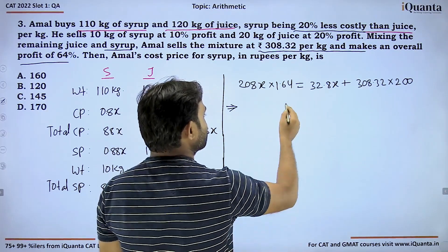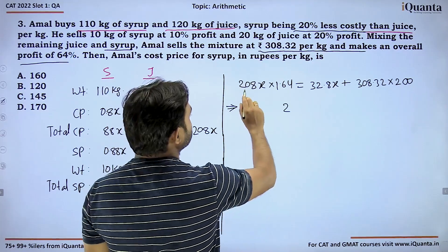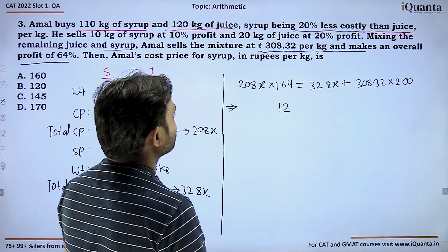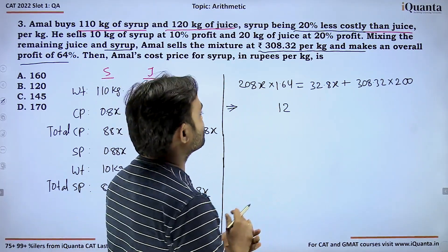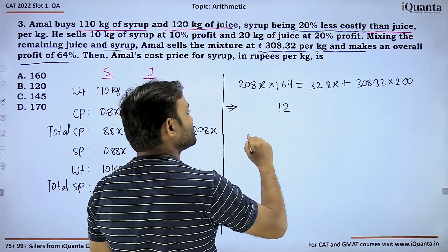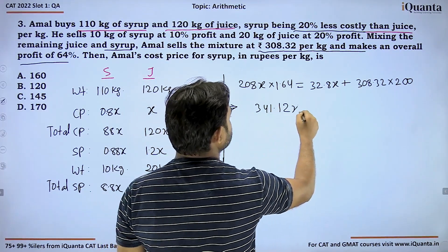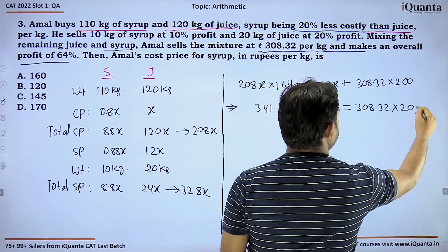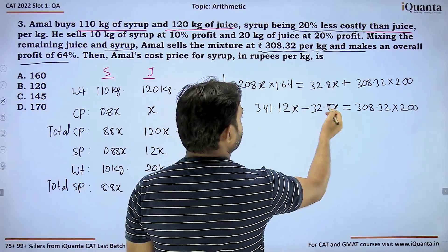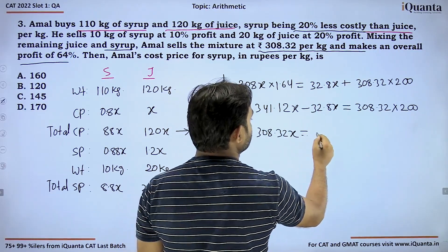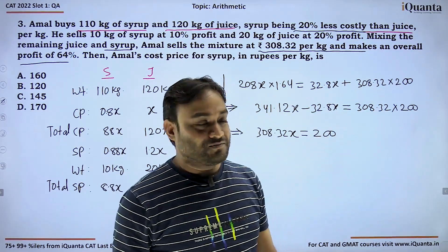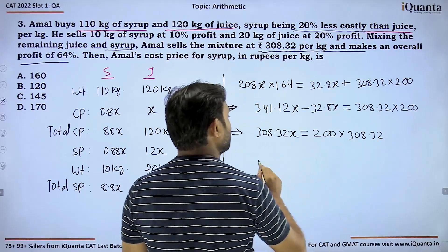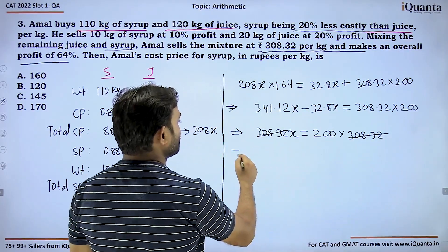Calculating 208 into 1.64, we get 341.12x. This equals 32.8x plus 308.32 into 200. From here 308.32x equals 200, so this strange value will be cancelled out eventually because it's the same value. 308.32 cancelled out, we get x equals 200.